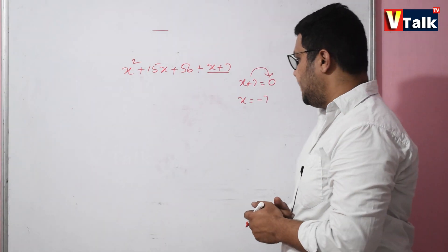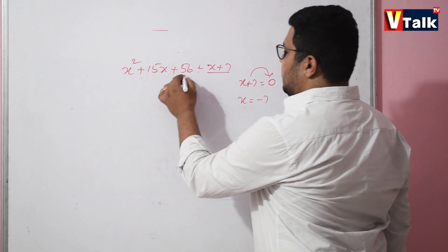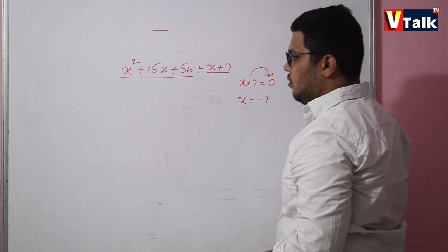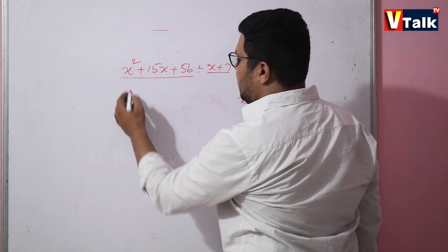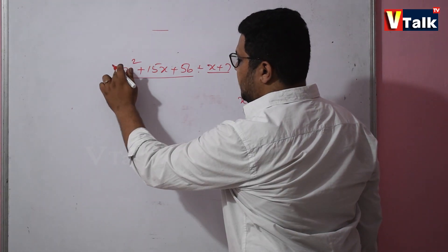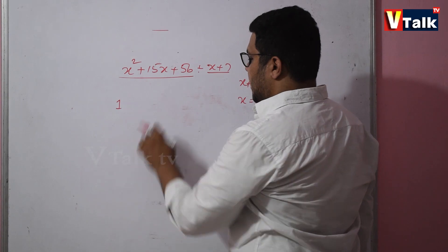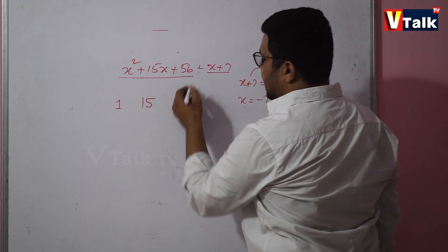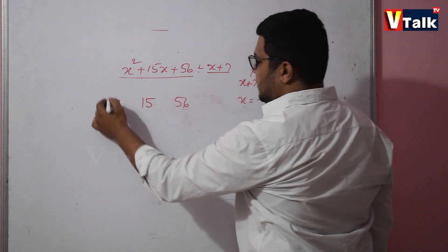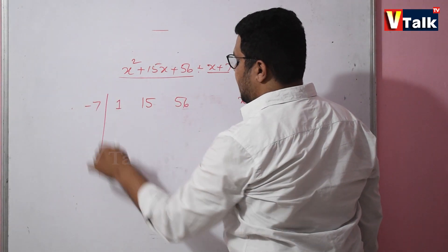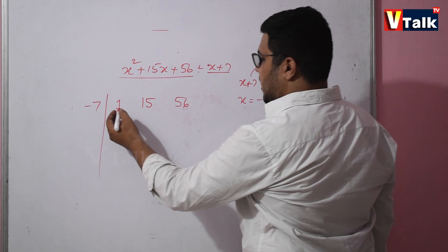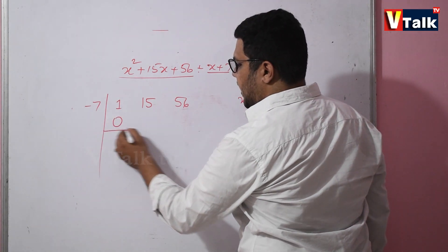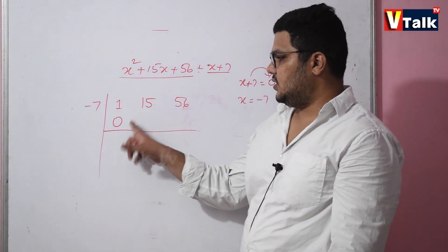Now, I will write the dividend coefficients. x squared coefficient is 1, x coefficient is 15, and the constant term is 56.